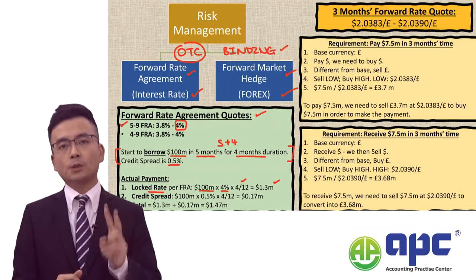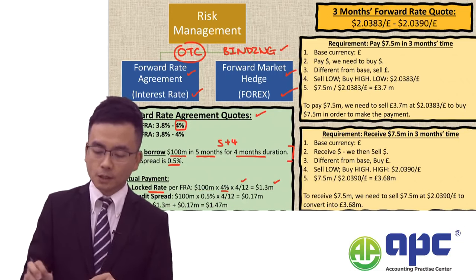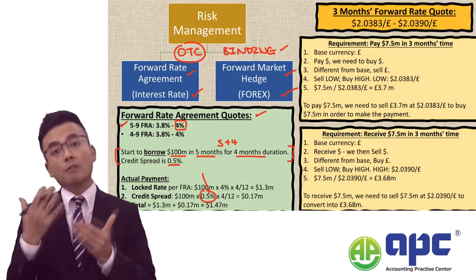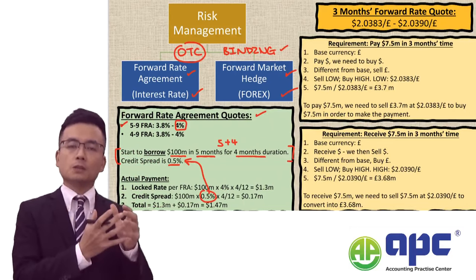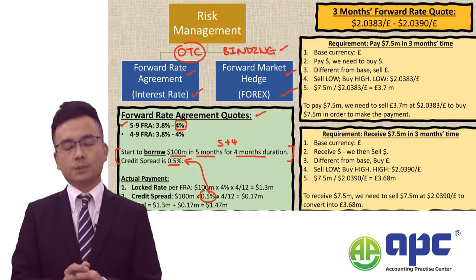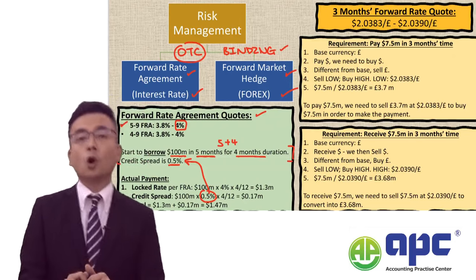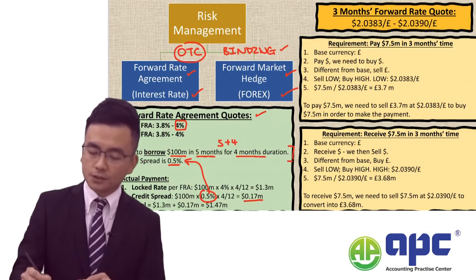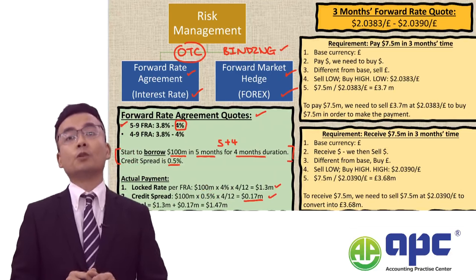The second step is to compute additional interest. You need to consider the credit spread of 0.5%, which solely reflects the entity's specific risk. So on that $100 million, for a duration of 4 months, you need to pay an additional $0.17 million. The total interest is $1.3 million plus $0.17 million, which equals $1.47 million.